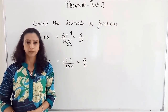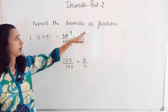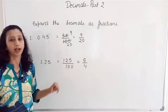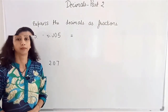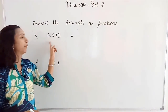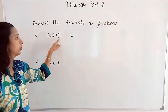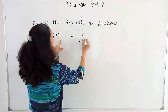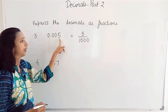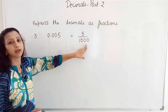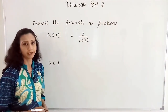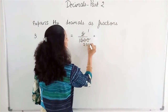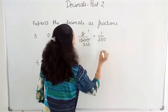This can be converted into a mixed fraction, but for now we are expressing decimals as fractions. Let's see an example with three decimal places. For 0.005: removing the decimal point gives 5, and there are three decimal places so the denominator is 1000. In lowest terms, dividing by 5 gives 1 by 200.